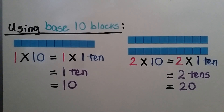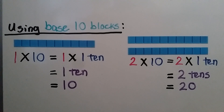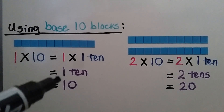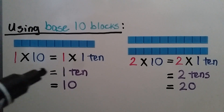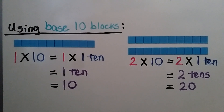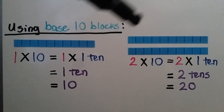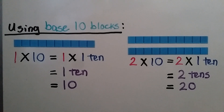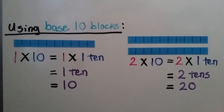Using base 10 blocks: here we have one strip of 10. It's 1 times 10, and it's equal to 1 times 1 ten, which is equal to 1 ten — that's 10. One times any number is that number. For this one, we have two strips of 10. We have 2 times 10, that's 2 times 1 ten, which is equal to 2 tens, which is equal to 20.